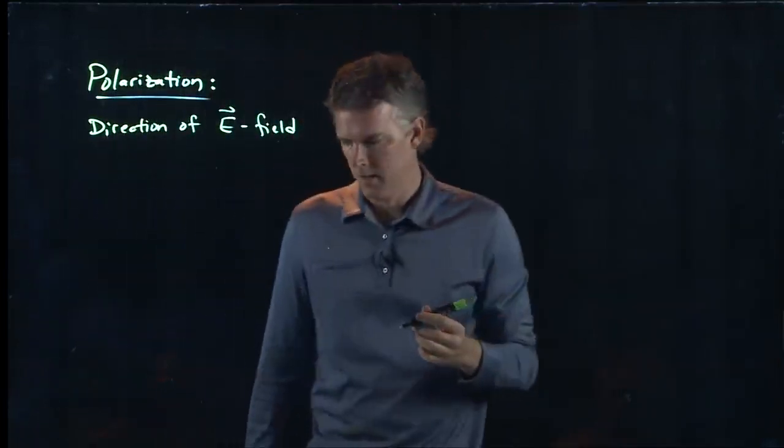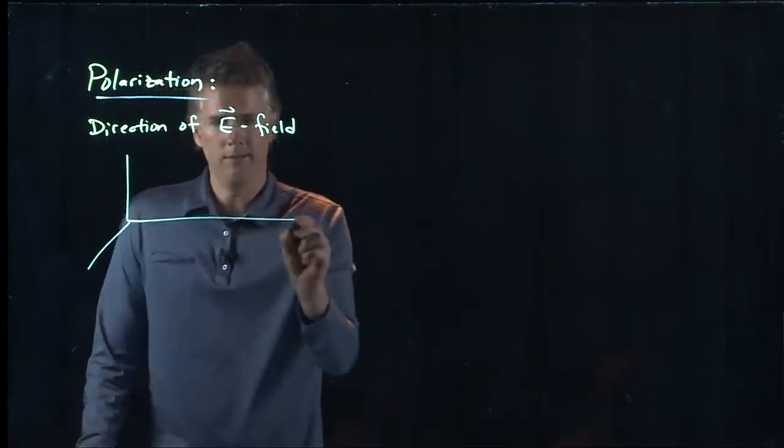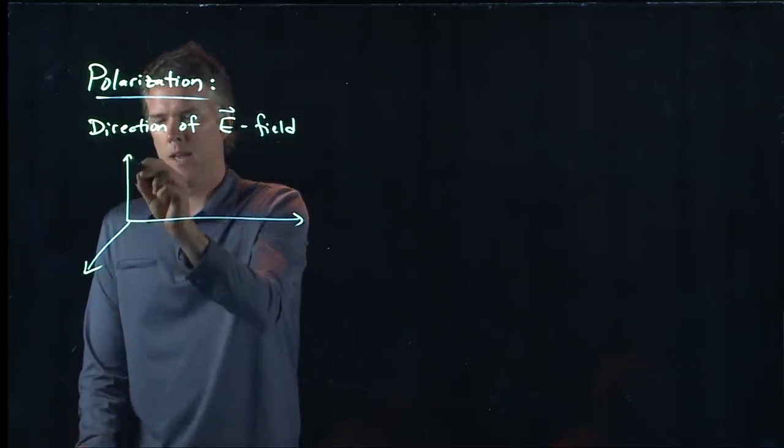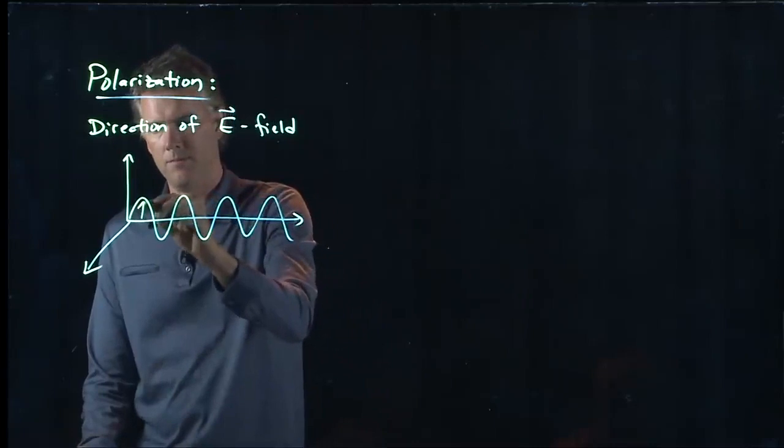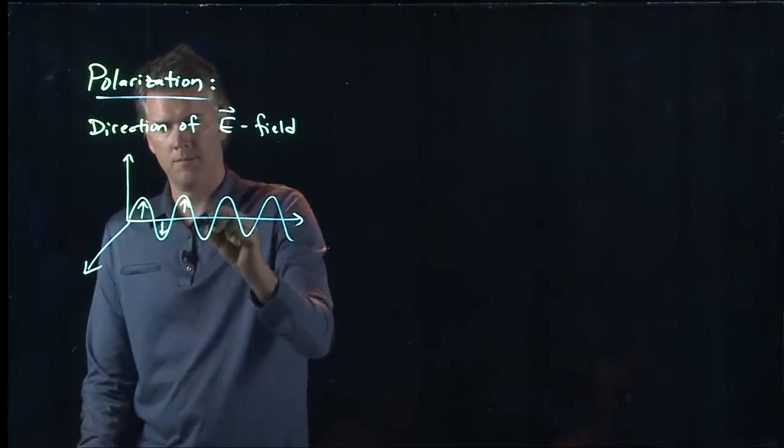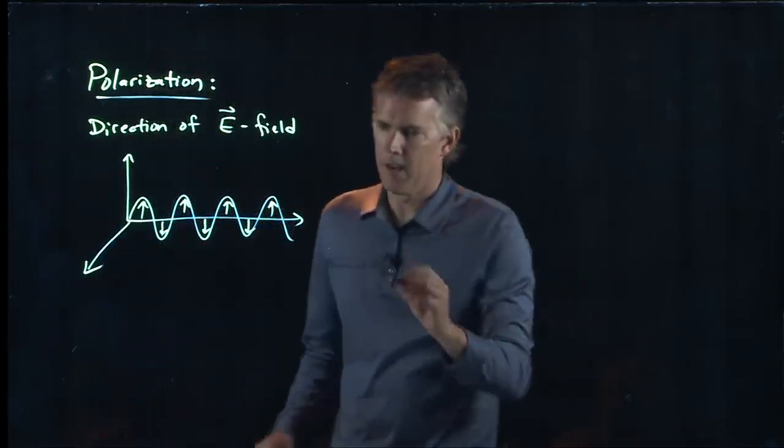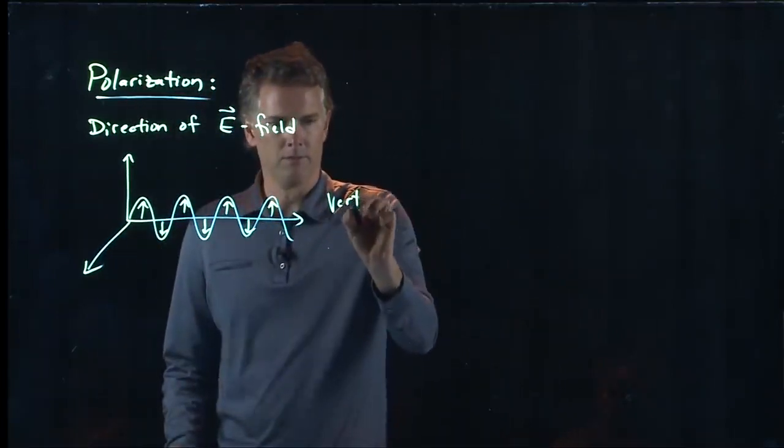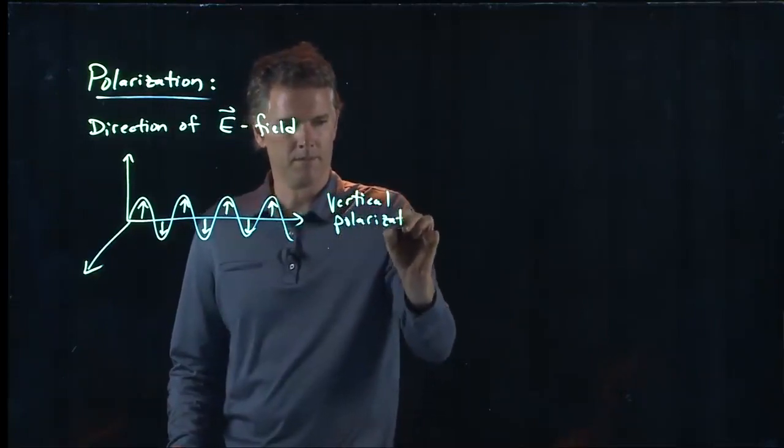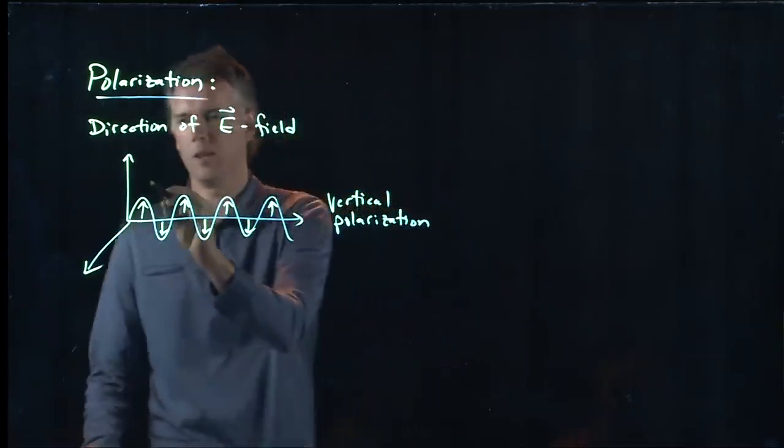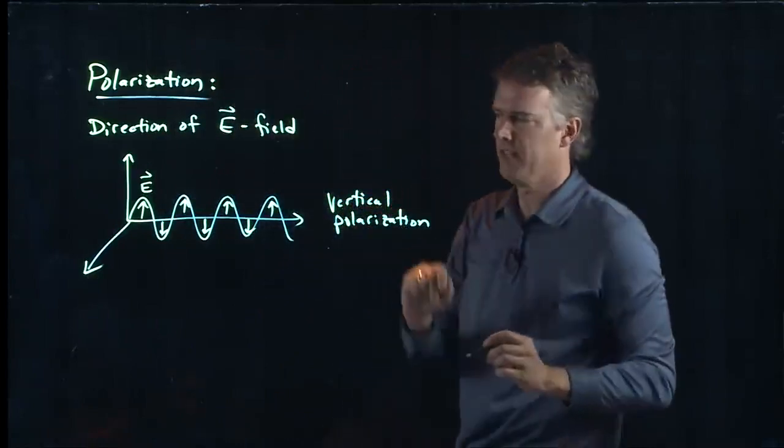This is just how it's defined. So, for instance, if my wave has an E field that's going up and down, then we say that it has vertical polarization. We don't really care about what the B field is doing. It's just defined in terms of the E field.